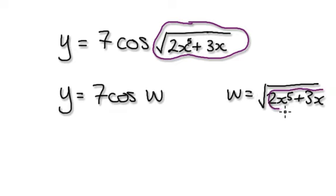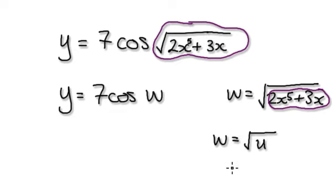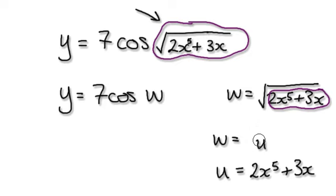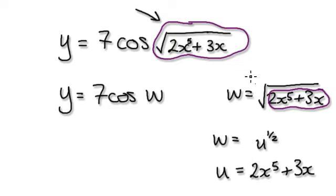Looking at w here, you can then imagine this bubble here, and you can say w equals the root of u, where u equals this bubble here, which is 2x to the power of 5 plus 3x. Because this bubble is so complicated, we're going to have to use two variables. We're going to visualize square root of u as u to the power of a half — it's nice and simple then.